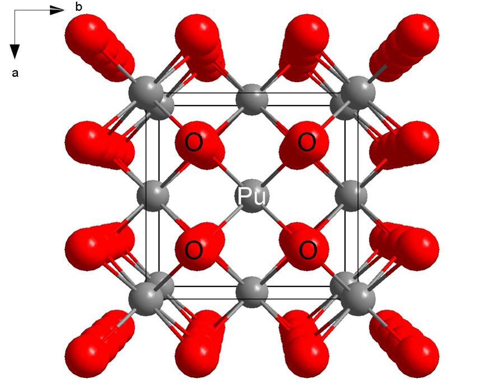Plutonium dioxide is a stable ceramic material with an extremely low solubility in water and with a high melting point. The melting point was revised upwards in 2011 by several hundred degrees, based on evidence from rapid laser melting studies which avoid contamination by any container material. Due to the radioactive alpha decay of plutonium, PuO2 is warm to the touch.